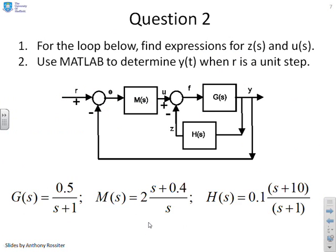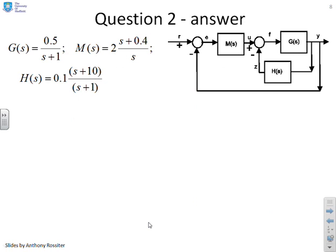Question 2. So this loop is a little bit more complex because there's three transfer functions in it. But still, we only have two summing junctions. So what we're interested in is find an expression for this signal here, Z. So not Y, but Z. And also an expression for U. So I'm just going to circle the things we're interested in. We wanted Z and we wanted U. So what's our trick before we solve these problems? Well, the simple trick is to resketch the diagram in a way that makes life a bit easier.